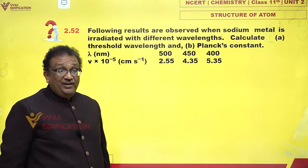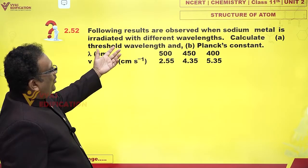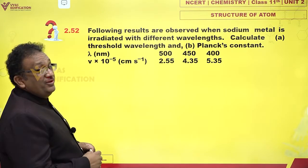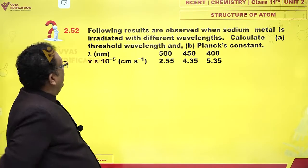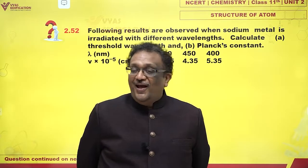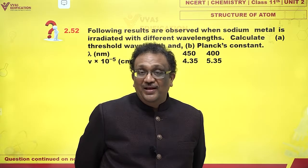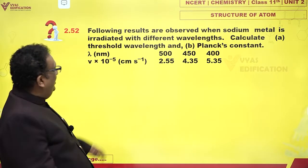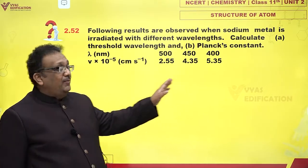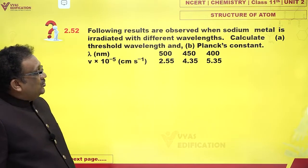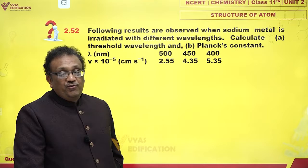One more question from photoelectric effect. Following results are observed when sodium metal is irradiated with different wavelengths. Calculate the threshold wavelength and, oh my god, the Planck's constant. Actually, this is also how Planck's constant was experimentally estimated. I am given incident radiation wavelengths and I am also given the kinetic energies of ejected photoelectrons.